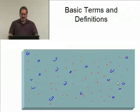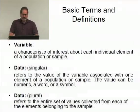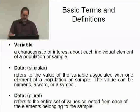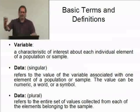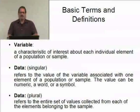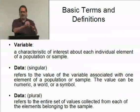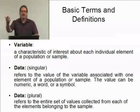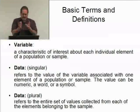A variable is a characteristic of interest about each individual element of the population or sample. If I'm taking a survey, one of the first things would probably be gender — that's a variable. I'd check male or female. Another variable might be how they're going to vote in the upcoming election. Each item of interest, each piece of information we're collecting, is a variable.